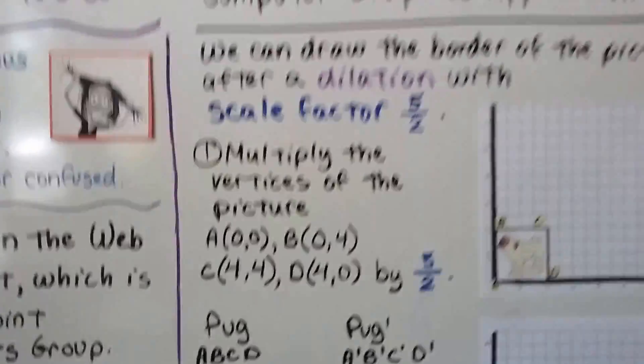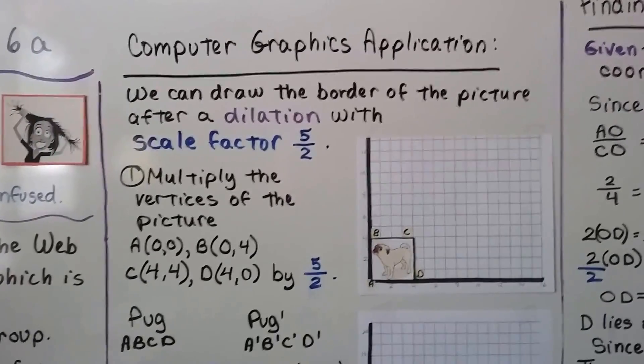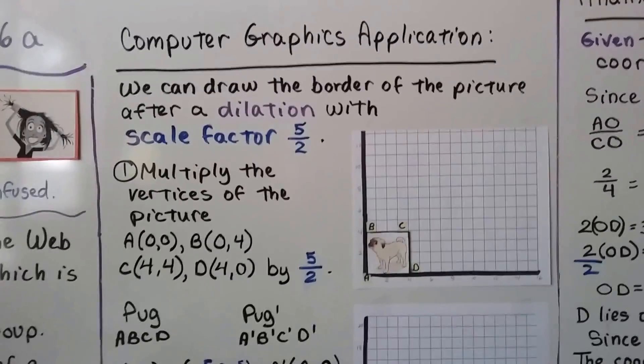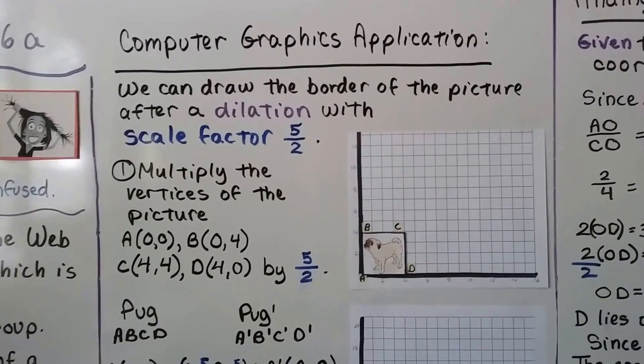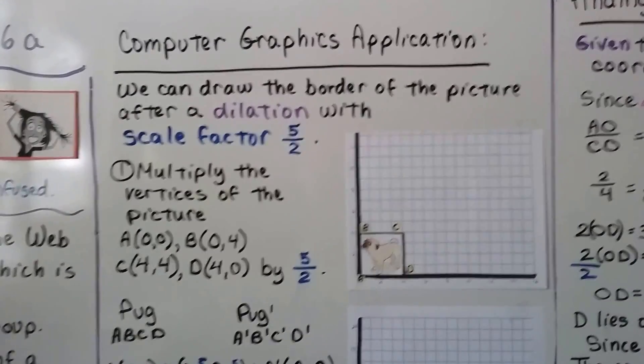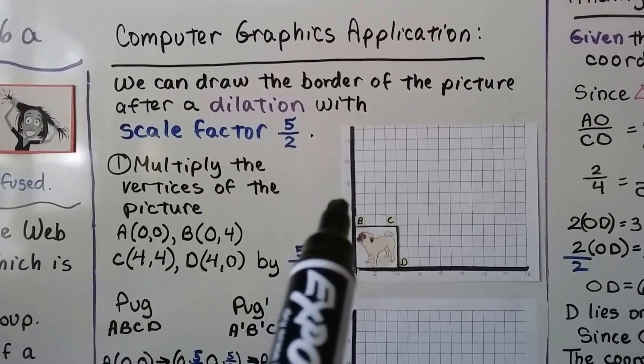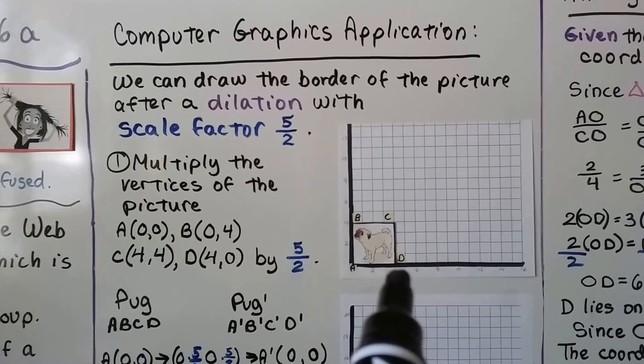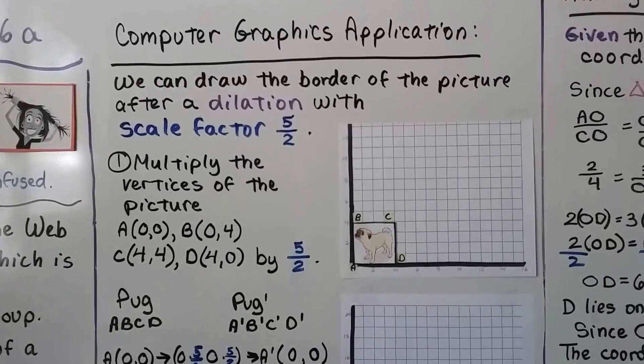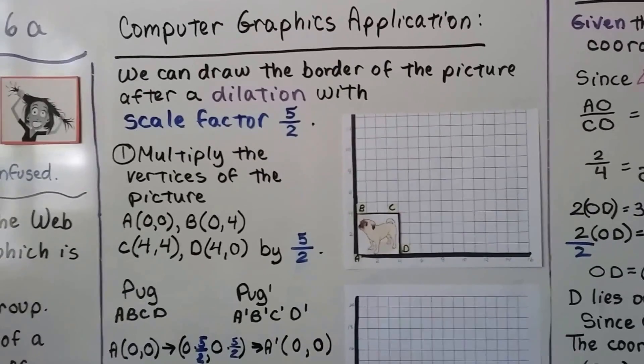For a computer graphics application, we can draw the border of a picture after a dilation with a scale factor of 5 halves. We multiply the vertices of the picture: A is at (0,0), B is at (0,4), C is at (4,4), and D is at (4,0). We multiply every single one of these X and Y values by five halves.